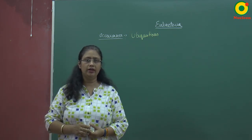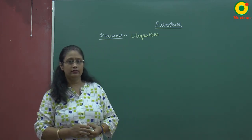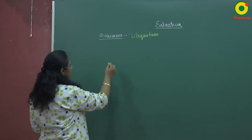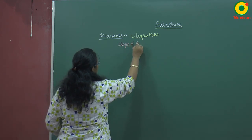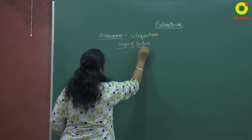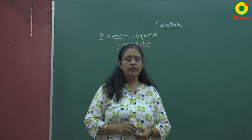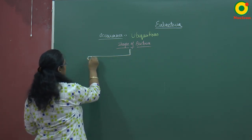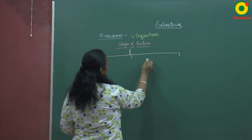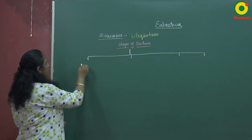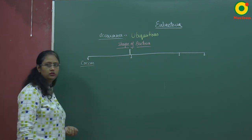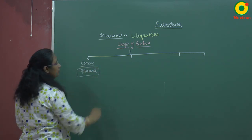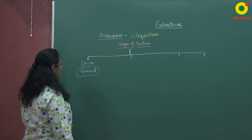Now let's discuss the shape of bacteria. On the basis of shape, bacteria are mainly of four types. The first shape is coccus. Coccus bacteria are spherical in shape and are again of many subtypes. If a single bacterium is present, it is known as monococcus. If bacteria are present in pairs, it is known as diplococcus. When present in chains, it is known as streptococcus.